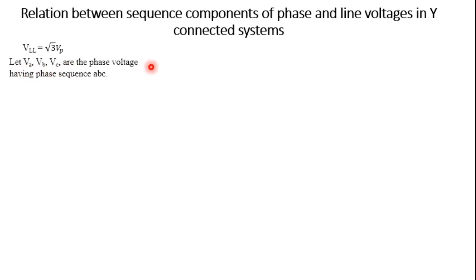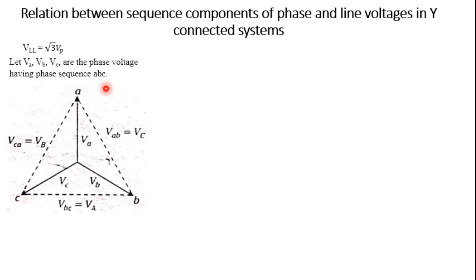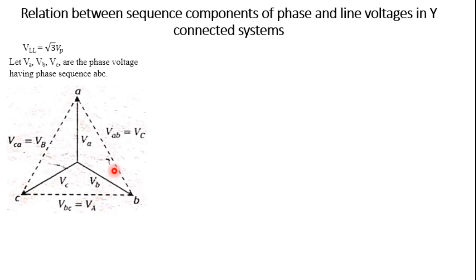Consider A, B, and C as the phase voltages with sequence A, B, C. This is the figure we are considering: points A, B, and C in a star connected system where the phase voltage is VA, VB, and VC. The line voltage between phase A and B is VAB, between B and C is VBC, and between C and A is VCA.